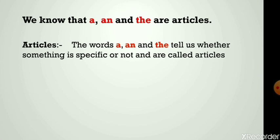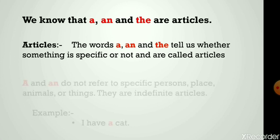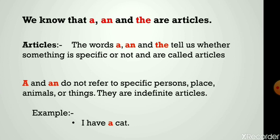The words a, an, and the tell us whether something is specific or not and are called articles. A and an do not refer to specific persons, places, animals, or things. They are indefinite articles. For example: I have a cat.